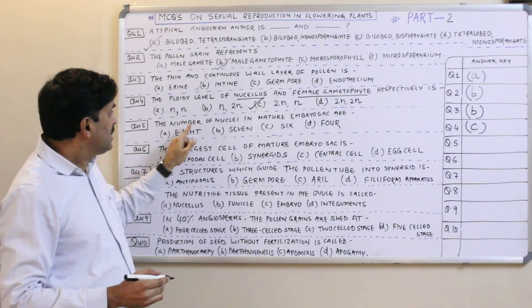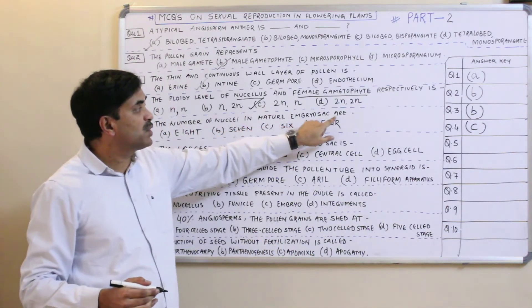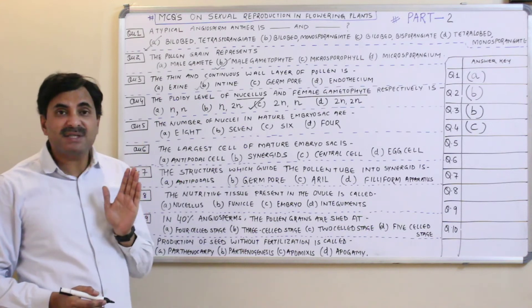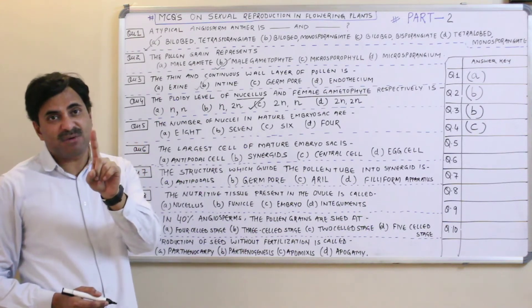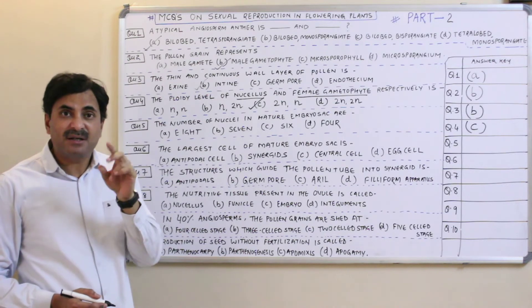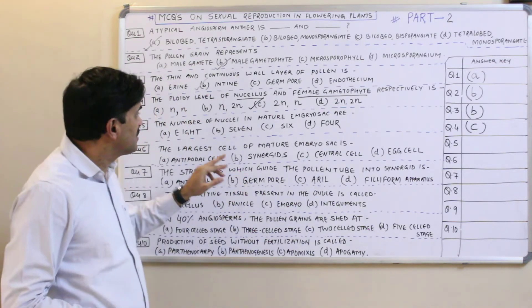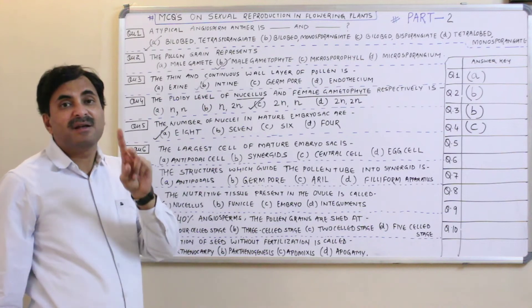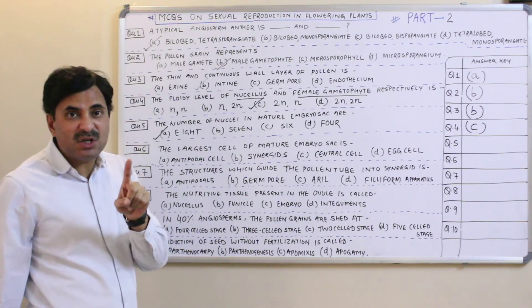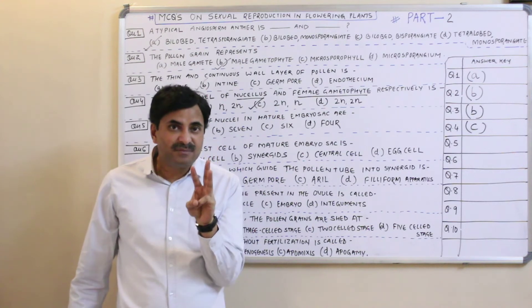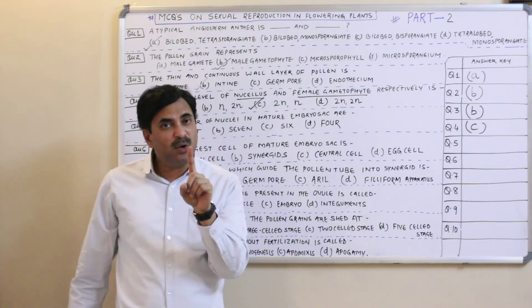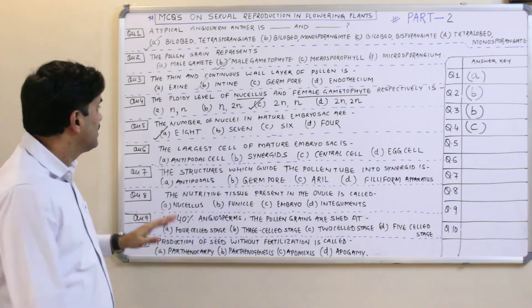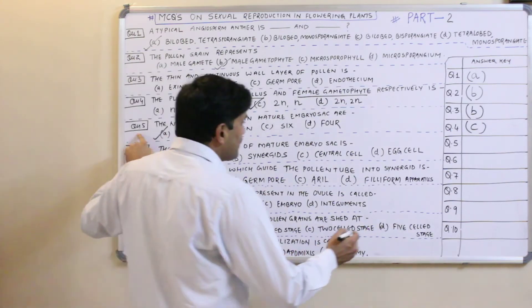Question number five: the number of nuclei in a mature embryo sac. A typical embryo sac is seven-celled and eight-nucleated. There are three nuclei of the antipodal cells, one nucleus of the egg cell, two nuclei of the synergids, and two polar nuclei in the central cell — total eight nuclei. Question number five has the answer A.